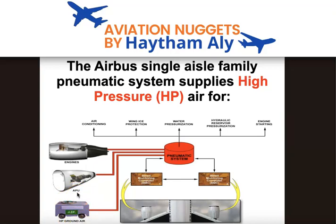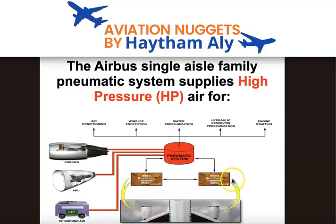For the engines, we have BMC1 (Bleed Monitoring Computer 1) and BMC2 (Bleed Monitoring Computer 2). BMC1 monitors bleed system for engine one, and BMC2 monitors bleed system for engine two. BMC1 and BMC2 are interconnected, and the BMC is the computer responsible for the pneumatic or bleed system.